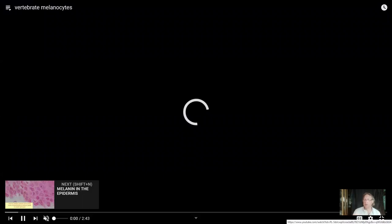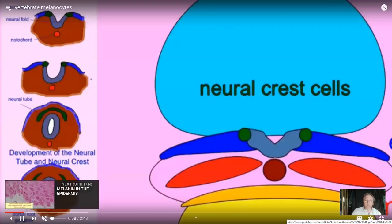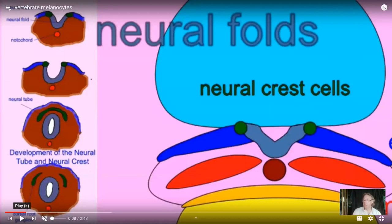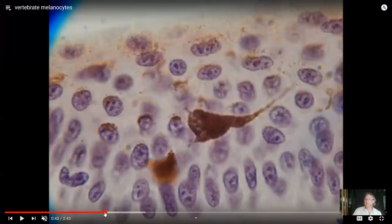90% of the cells of the epidermis are keratinocytes, which store the protein keratin, making the skin largely water-resistant. It's not waterproof — we don't lose zero water through our skin — but the presence of keratin limits water loss. There is a very interesting type of cell found in vertebrates called a melanocyte, and I'll describe a little bit of its embryology.